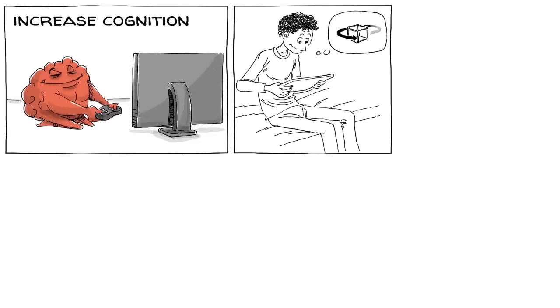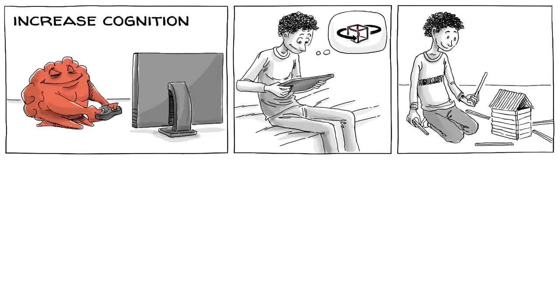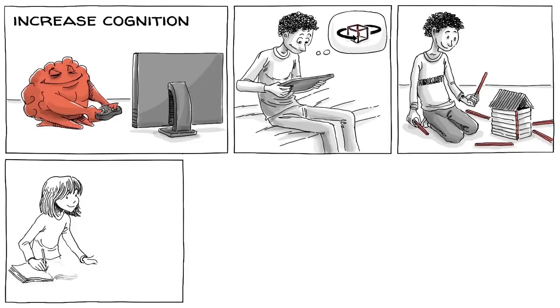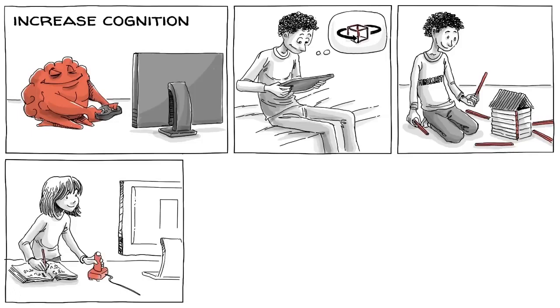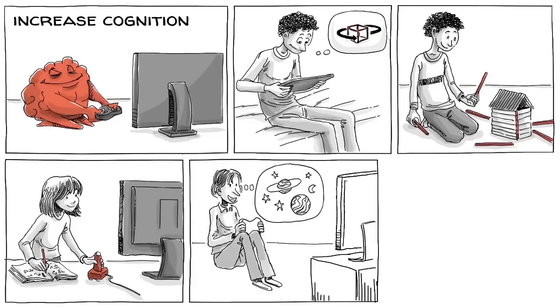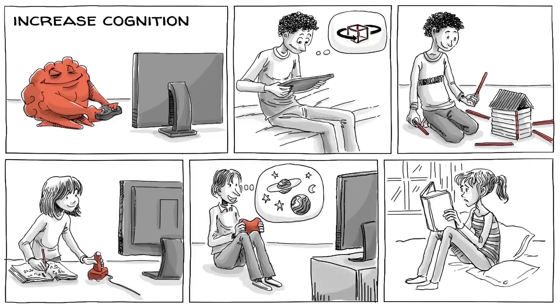Games can increase cognition by strengthening particular areas of our brain. One meta-analysis showed that video games effectively teach mental rotation abilities, and that such learning can be transferred to the real world. Logic and mathematical thinking can also be effectively learned through specific video games. Shooter games, for example, often train our understanding of relations among objects in space better than regular high school programs.